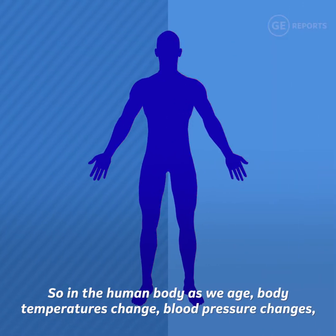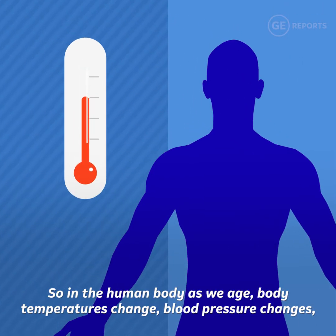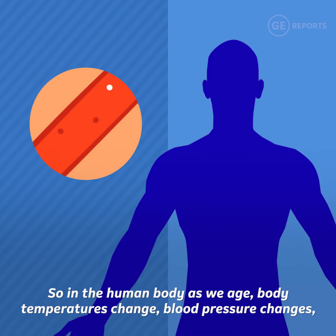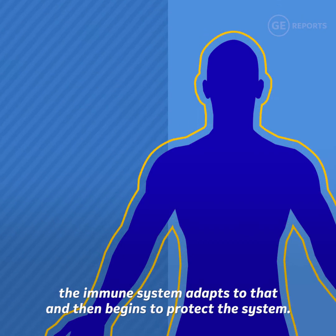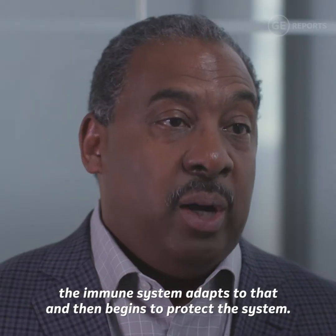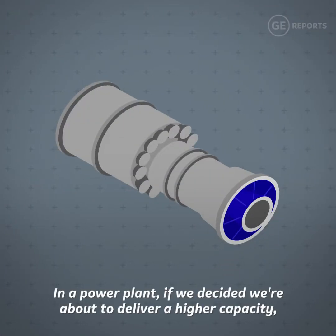In the human body as we age, body temperatures change, blood pressure changes, and the immune system adapts to that and then begins to protect the system.